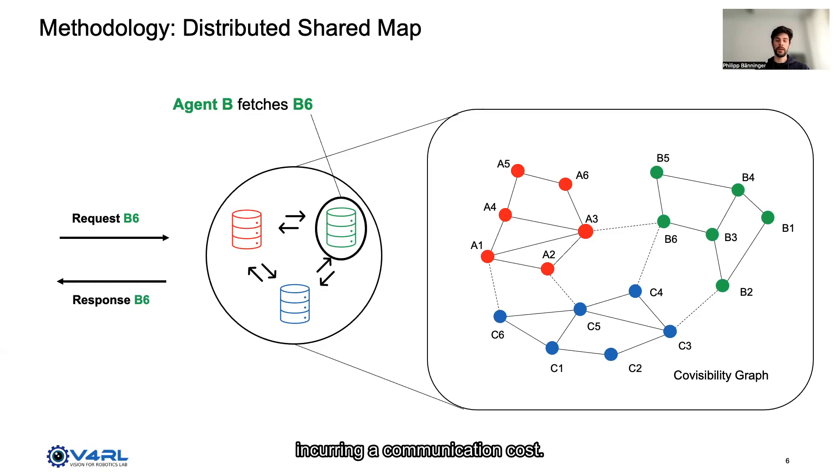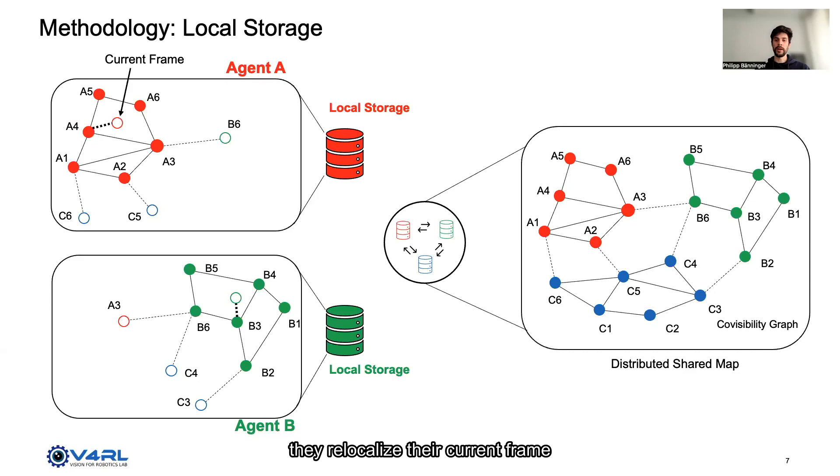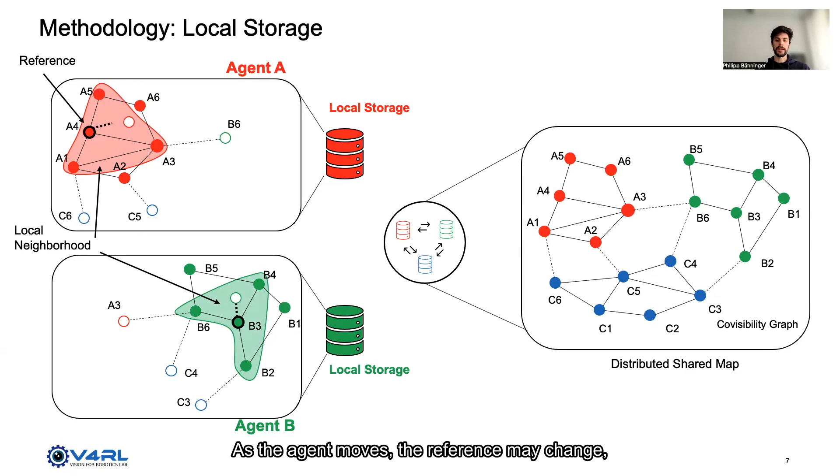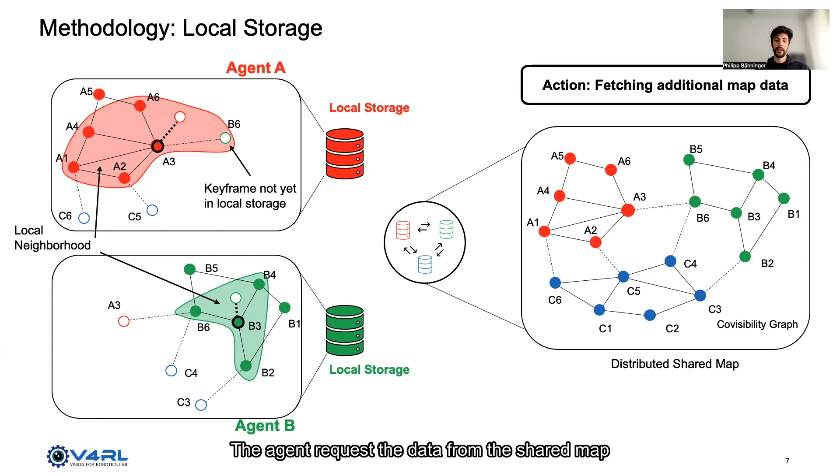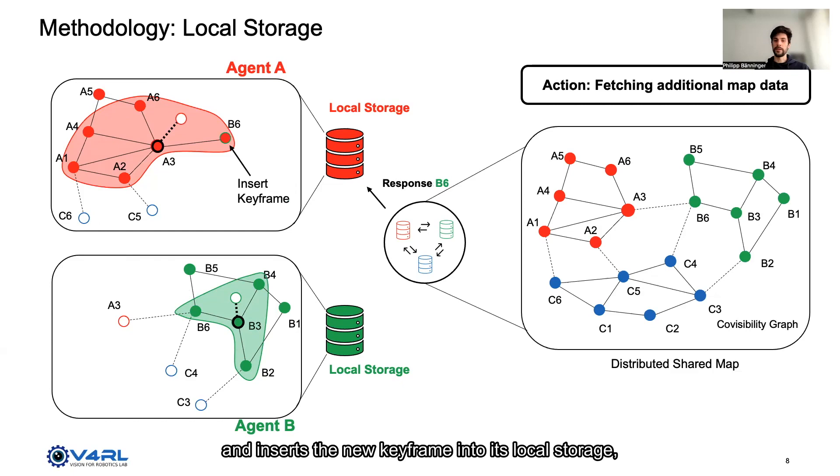As agents traverse the scene, they relocalize their current frame using a local neighborhood around the reference keyframe. As the agent moves, the reference may change, requiring the agent to fetch new map data. The agent requests the data from the shared map and inserts the keyframe into its local storage, including its neighbors.